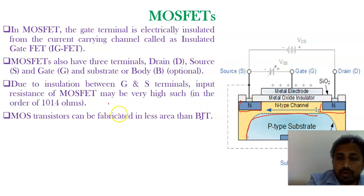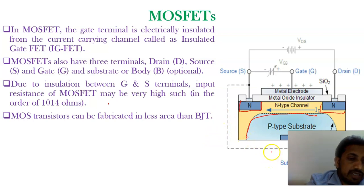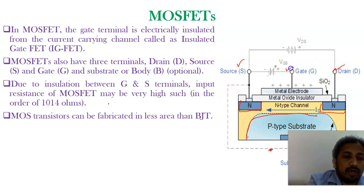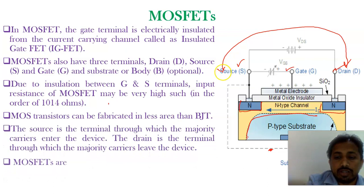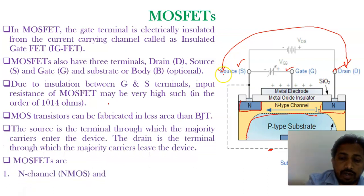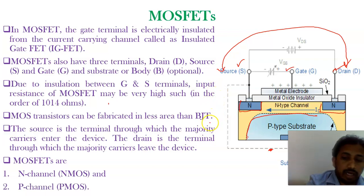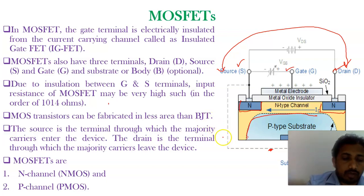Every MOSFET has three terminals: source, drain, and gate. The substrate is a fourth terminal. One thing to note is that source and drain can be interchanged. MOSFETs are of two types: N-channel MOSFETs and P-channel MOSFETs.